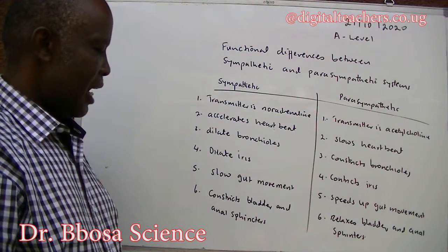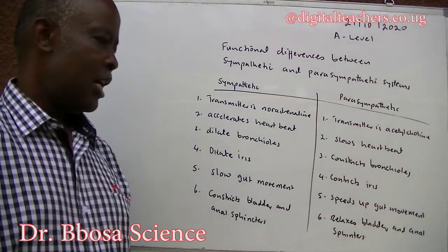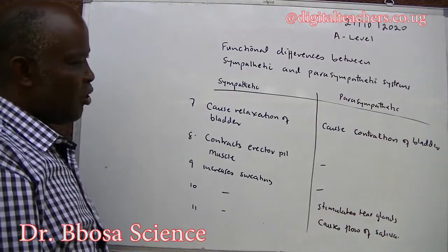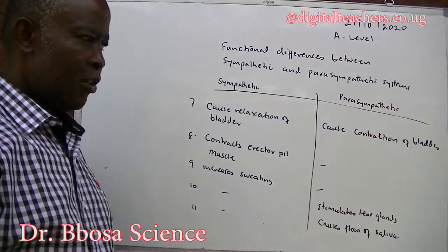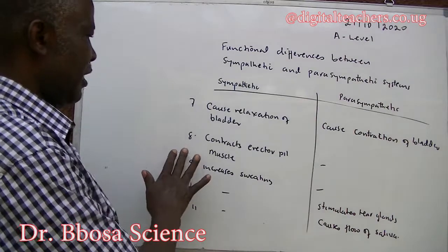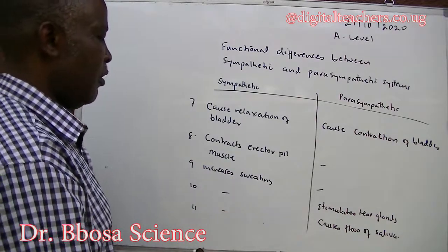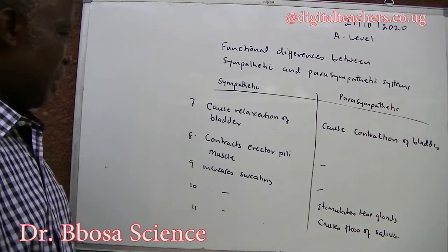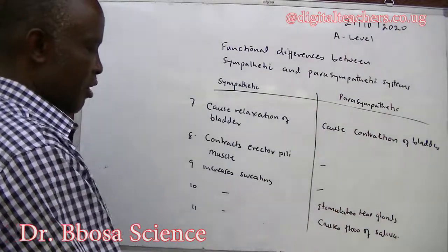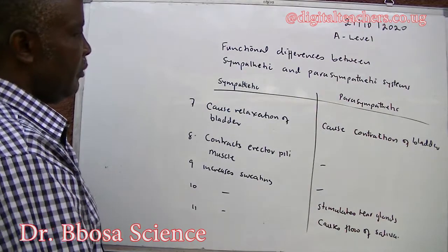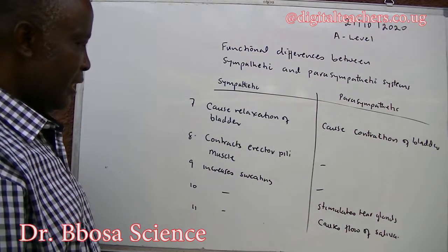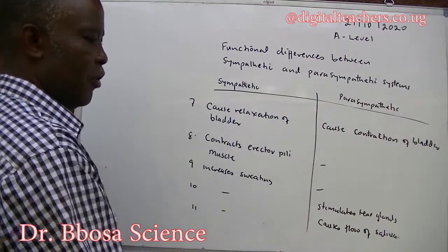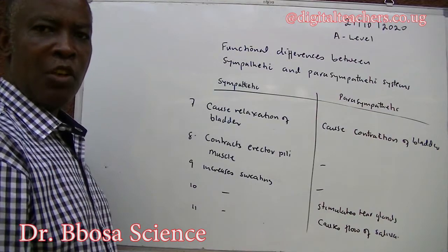The sympathetic constricts bladder and anal sphincters, while the parasympathetic relaxes bladder and anal sphincters. The sympathetic causes relaxation of the bladder; the parasympathetic causes constriction of the bladder. The sympathetic causes contraction of the erector pili muscle; the parasympathetic has no effect. The sympathetic causes sweating; the parasympathetic has no effect. The parasympathetic stimulates tear glands and causes flow of saliva, while the sympathetic has no effect on these.